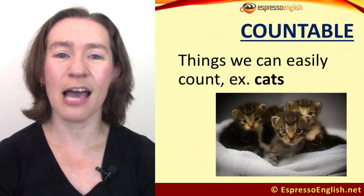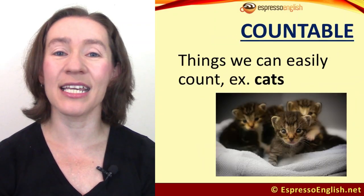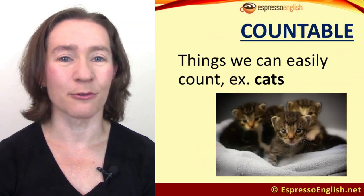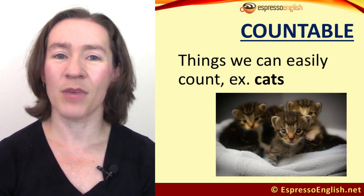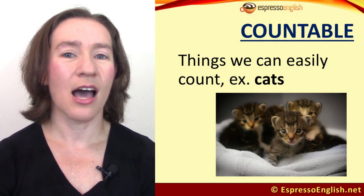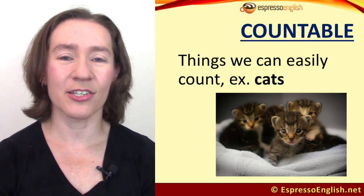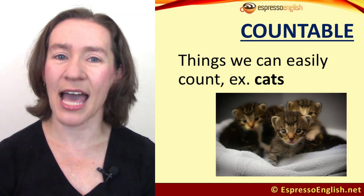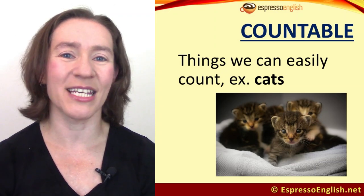We'll start with countable nouns. These are things we can easily count. For example, cats. My brother has a cat, one cat. My sister has two cats. My friend has three cats.